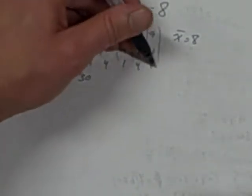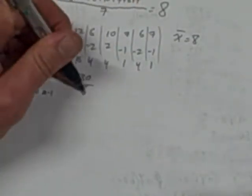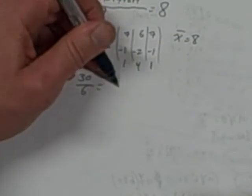And it's tempting to divide it by how many there are: 1, 2, 3, 4, 5, 6, 7. But remember, you divide by n minus 1. You divide by 1 less than there are, which is 6. 30 divided by 6 is 5.